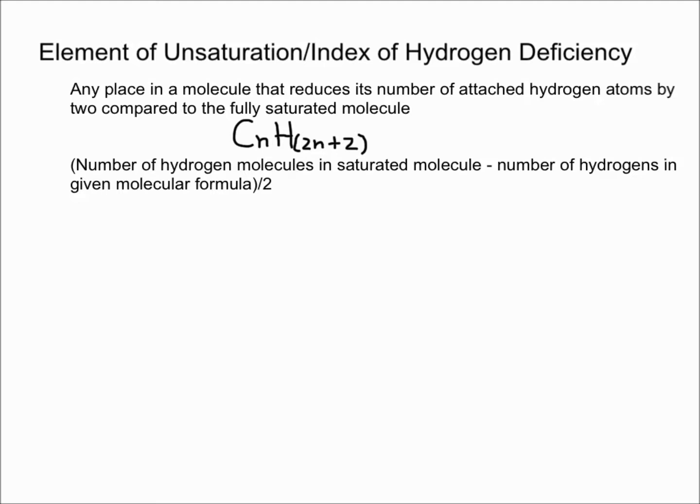Then the hydrogens on that would be 2 times 6 plus 2, which would be 14. So if we had six carbons, a fully saturated molecule would have 14 hydrogens.